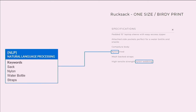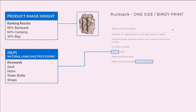So in this case, we can determine possibly from the description keywords like nylon, water bottle, straps. But it's still missing some information. But as they say, photos don't lie.